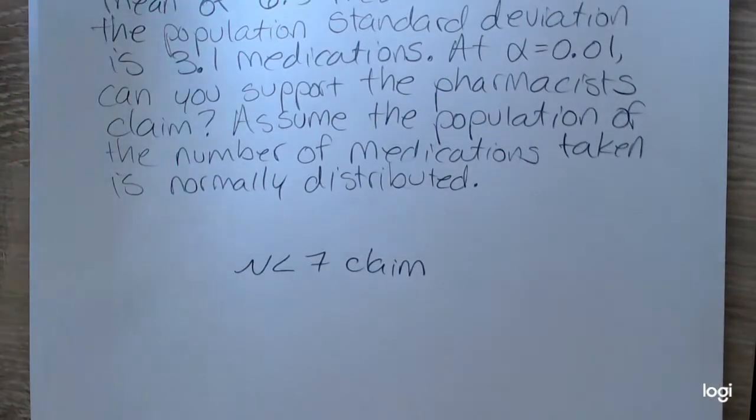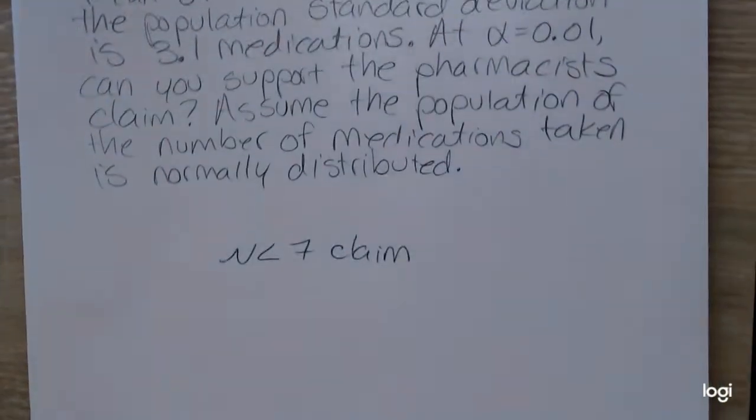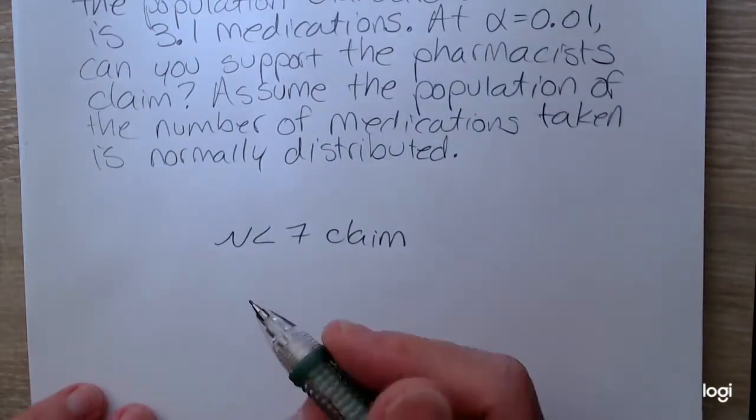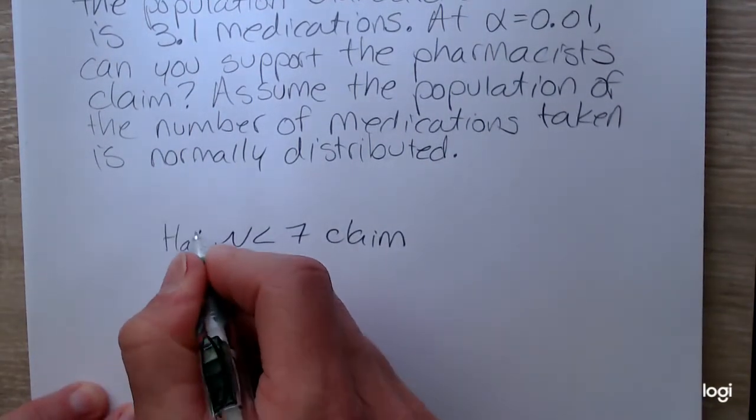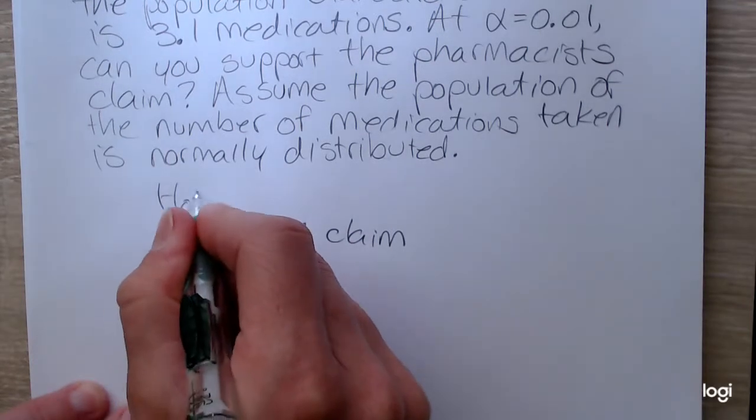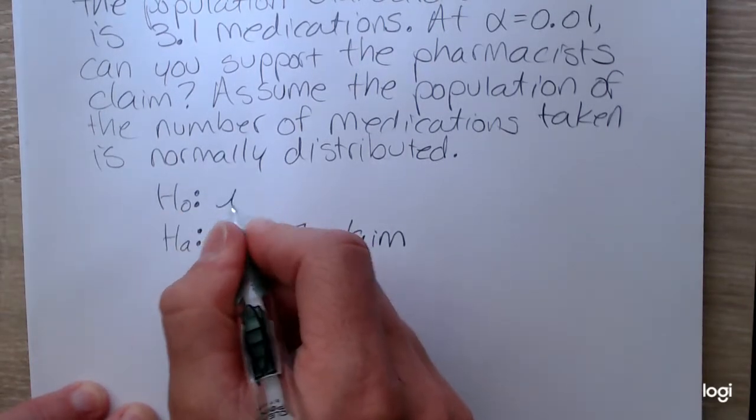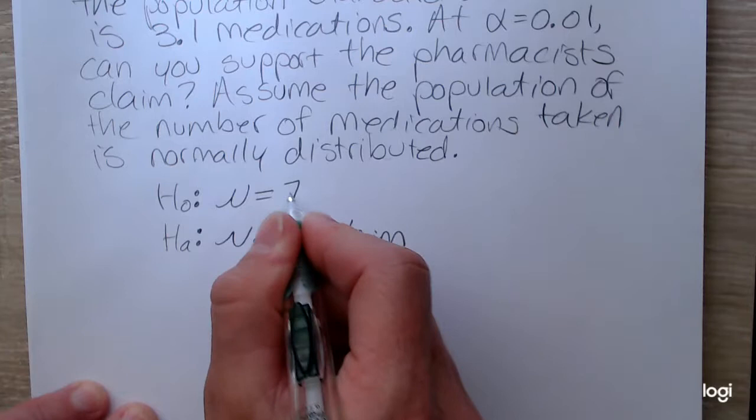Now this claim does not contain the case of equality. So this makes the claim the alternative. Remember the case of equality belongs in the null. So this makes the null mu equal to seven.